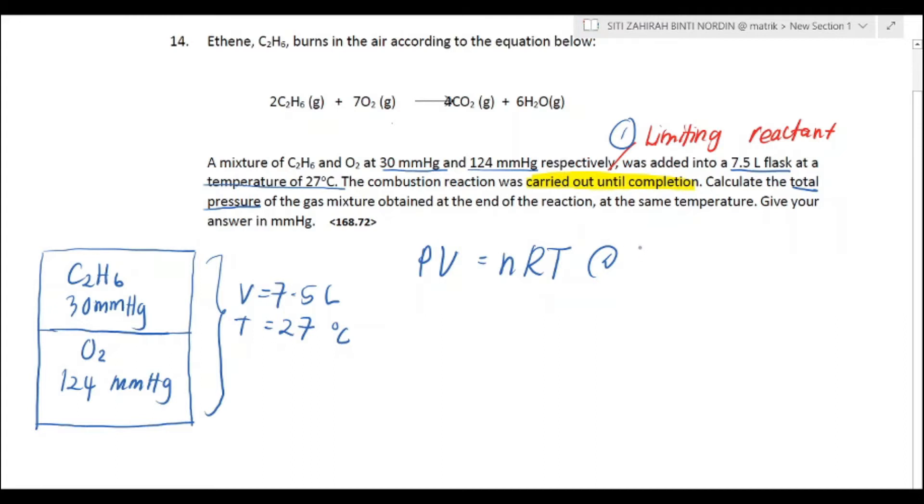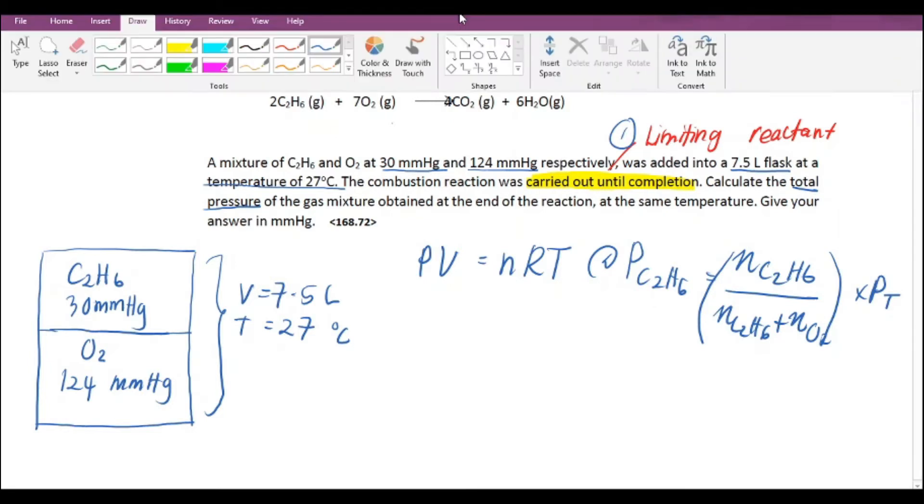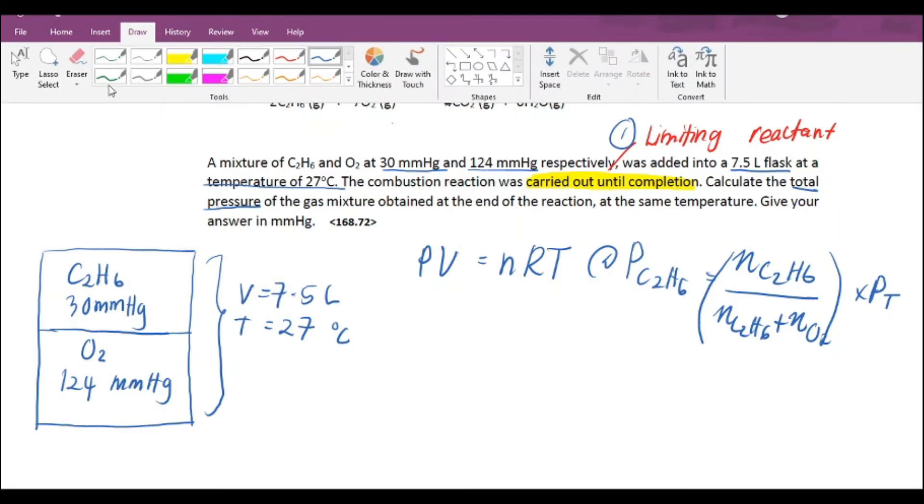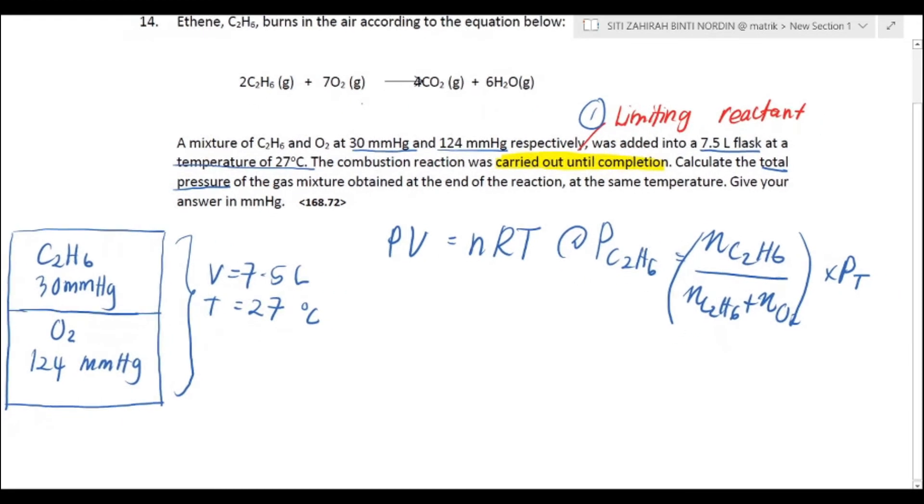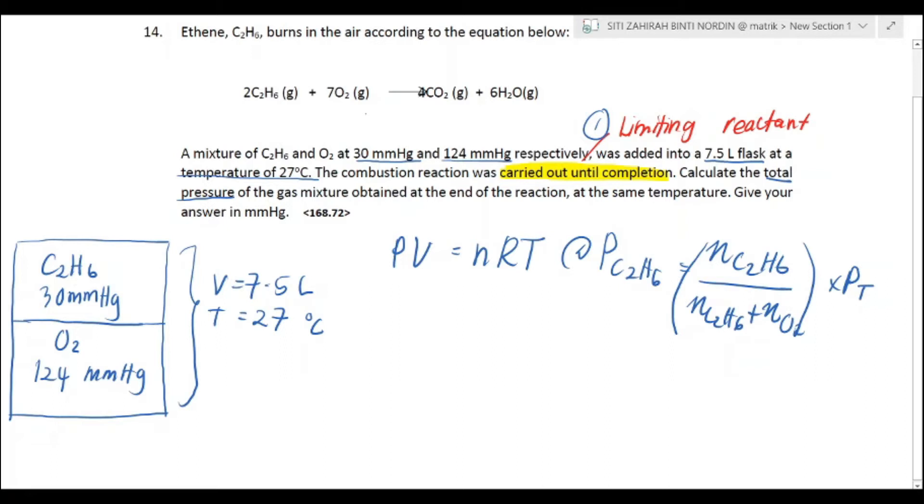This is not a displacement of water question, so we can be considering of using the formula PV = nRT. Or we can use the formula of partial pressure. The pressure of C2H6 is equal to the mol of C2H6 over mol of C2H6 plus mol of O2 times total pressure. Let's check which one would be easier for us to use.